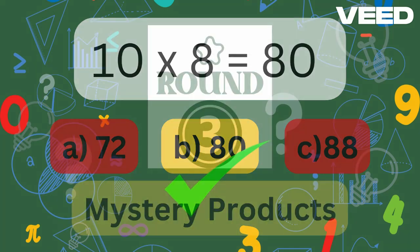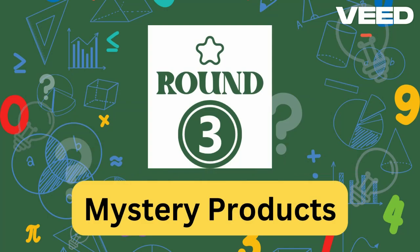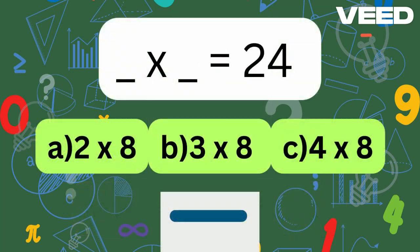Round 3: Mystery Products. You'll only see the answer, and you have to figure out the multiplication — what times what gives that answer?